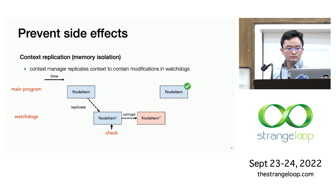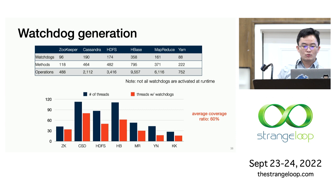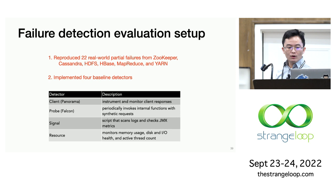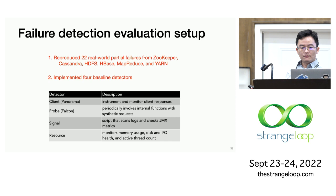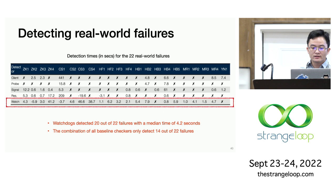For evaluation, we applied OmegaGen on six large distributed systems. As shown in the table, our tool can generate hundreds of watchdogs for these systems. The figure shows the coverage ratio of watchdogs at the thread-level granularity for each system, and the average coverage ratio is around 60%. To further evaluate how effective those generated watchdogs are, we reproduced 22 real-world failures from six distributed systems. For comparison, we implemented four types of advanced checkers: the client detector is Panorama from the first part of the talk, and we also implemented probe checkers, signal checkers, and resource checkers, which are common practices for detecting complex failures.